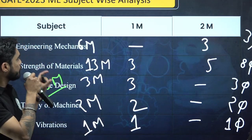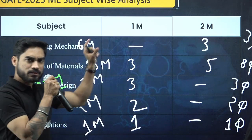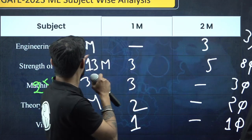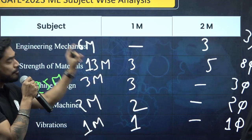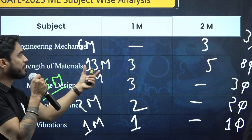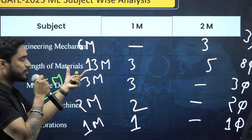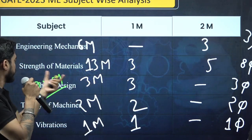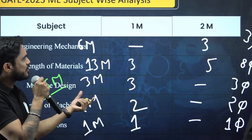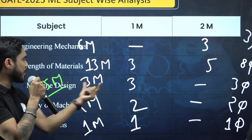From design, if you see engineering mechanics, there were 3 questions of two marks. Strength of materials had 5 questions of two marks and 3 questions of one mark, very high weightage this year, almost double of what came last year. In machine design, as expected, there were only 3 questions of one mark.